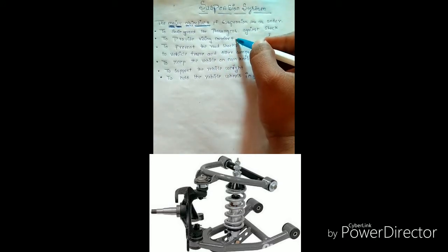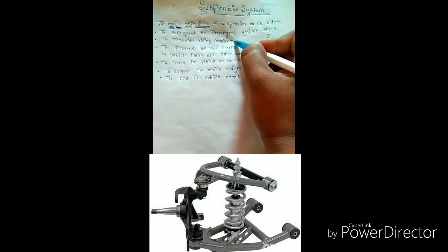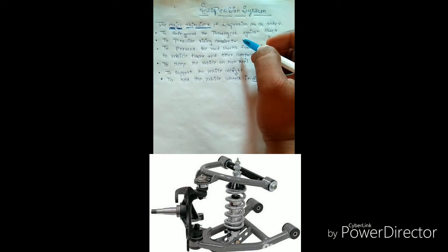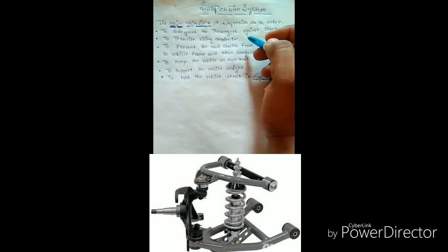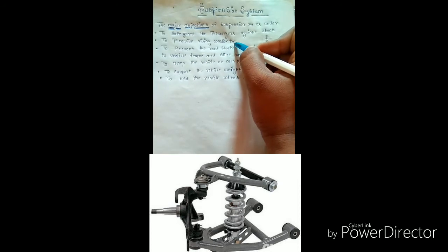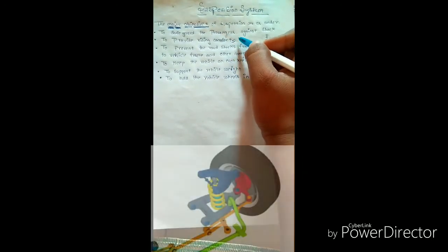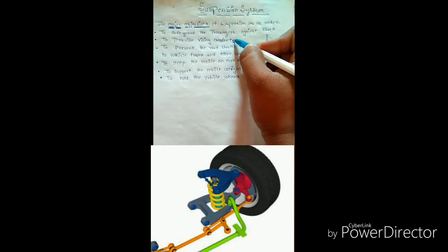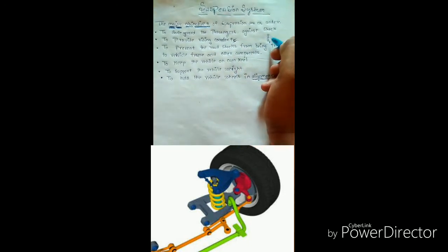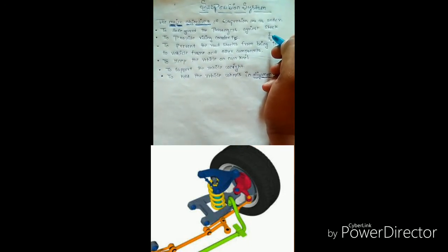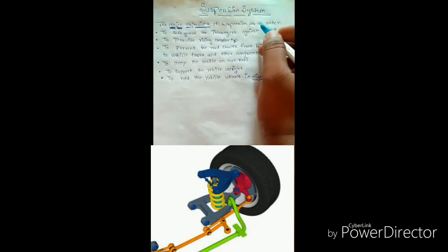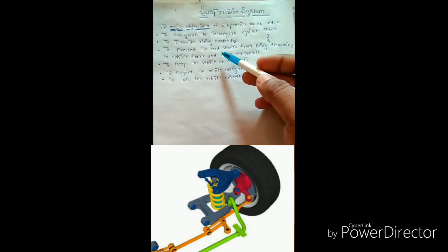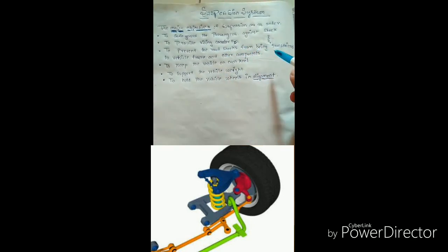To provide riding comfort — this is an important point — because if there is no riding comfort, it will be so much difficult to ride a vehicle and no one will prefer to go by any vehicle. So the suspension absorbs the vibrations and shocks and provides riding comfort. Another objective is to prevent the road shocks from being transmitted to the vehicle frame and other components.